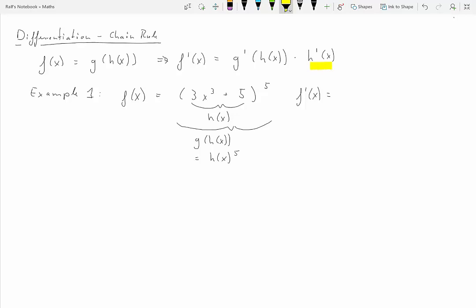The easiest part is really the h prime x, because we have h(x) defined as 3 times x to the third plus 5. Now calculating the derivative of this, h prime x is not so difficult. That's merely 9x².